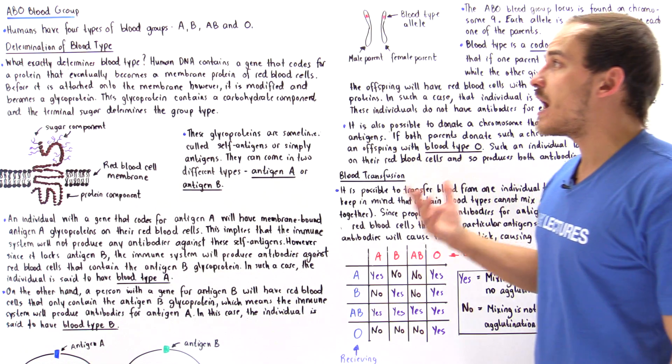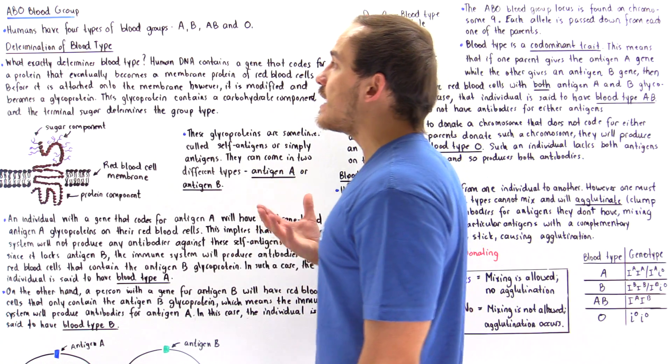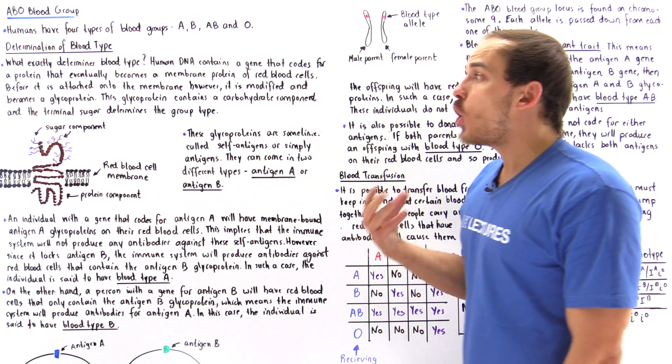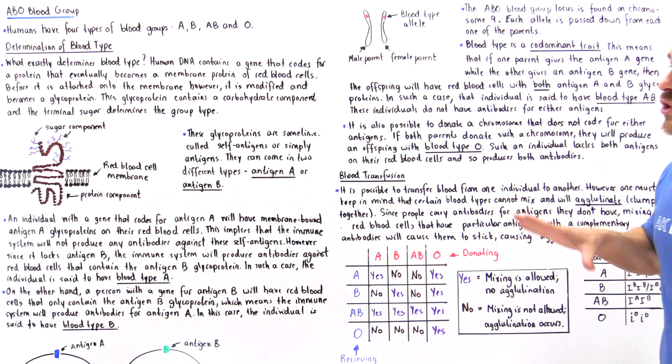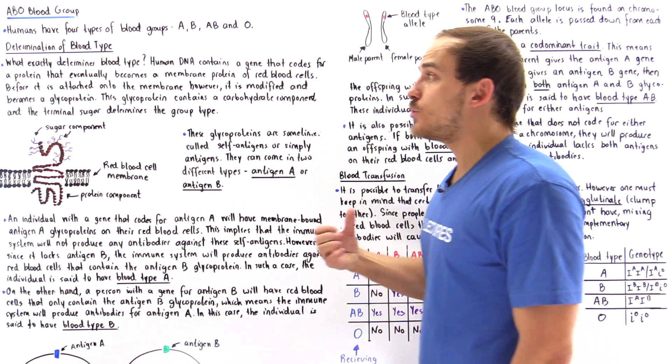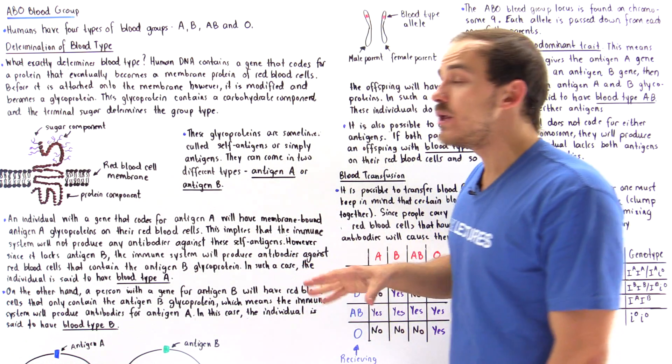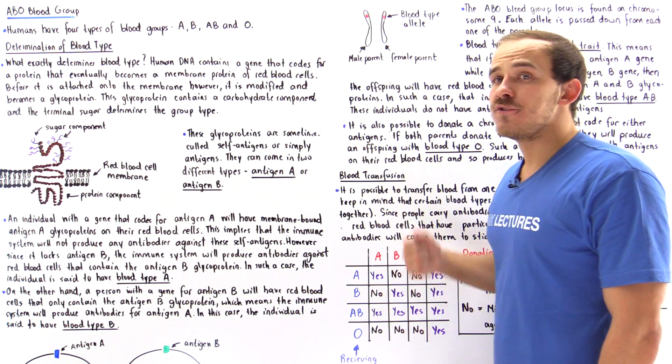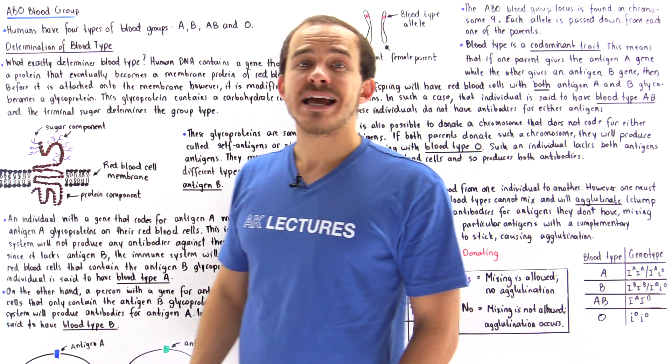So these are the four different types of blood groups that humans actually have. And we see that knowing how the immune system actually works and the fact that it produces antibodies is crucial to actually understanding how and why blood transfusion takes place and how it works.